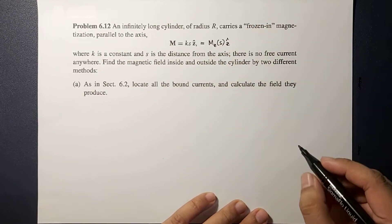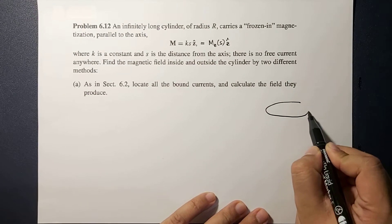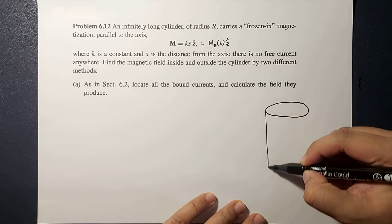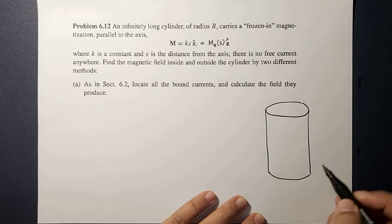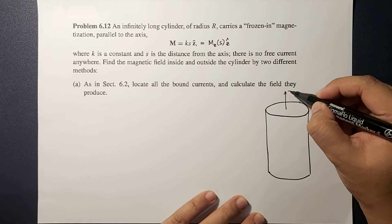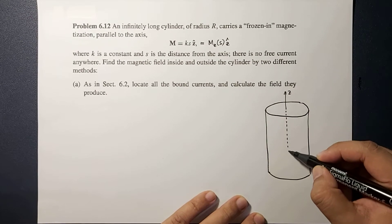So to illustrate that, consider this cylinder where the Z axis is the axis of your cylinder.